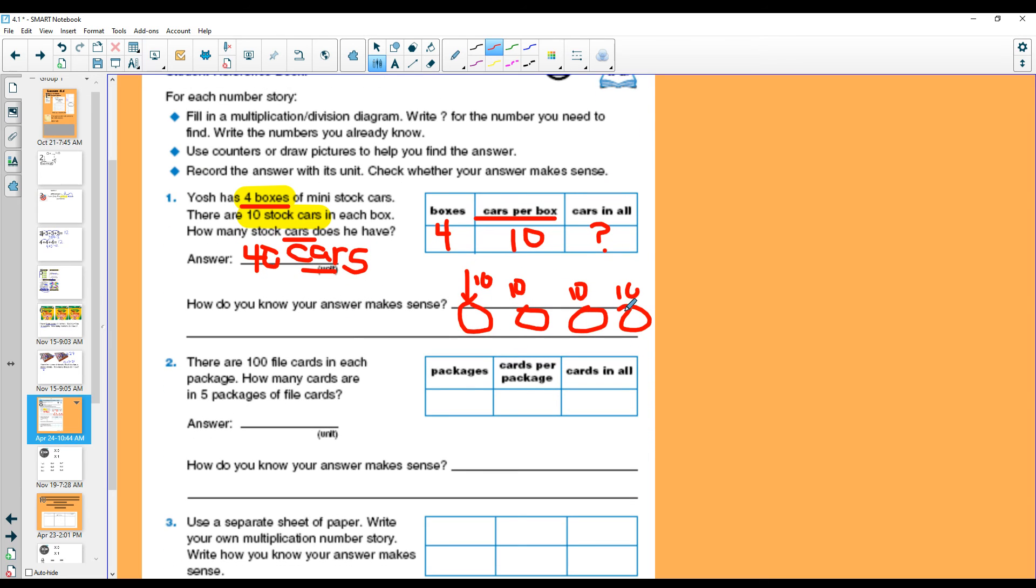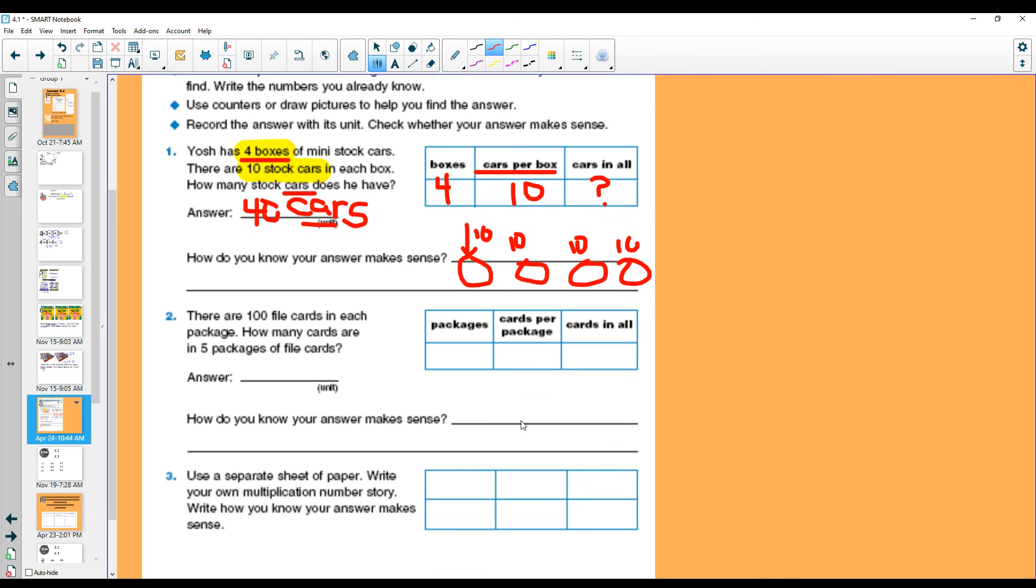Alright. Here, this is my picture. My picture helps me to know that it makes sense. We're not adding here. A lot of kids want to add four plus ten. That's going to give us fourteen. That doesn't make sense because I have ten in each one. Alright. Let's try another one. There are a hundred file cards in a package. How many cards are in five packages? So I have cards per package. We have a hundred file cards in each package. I have five packages.